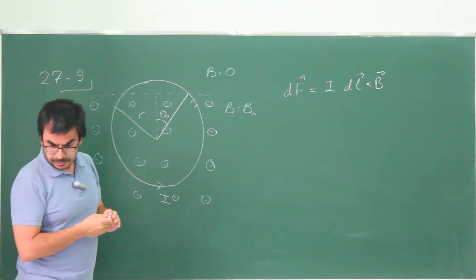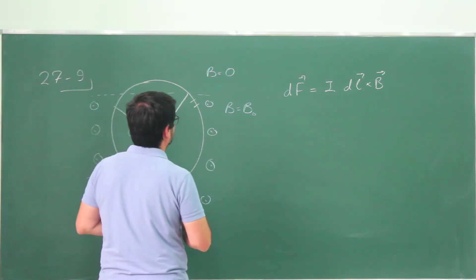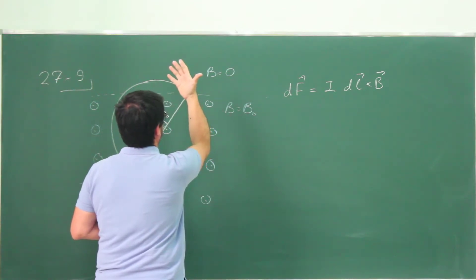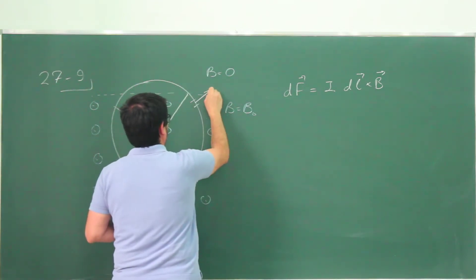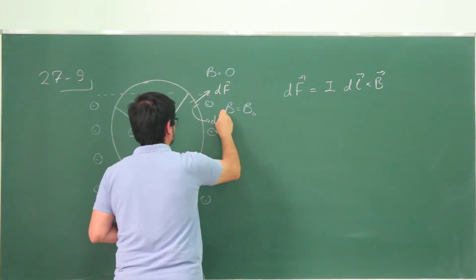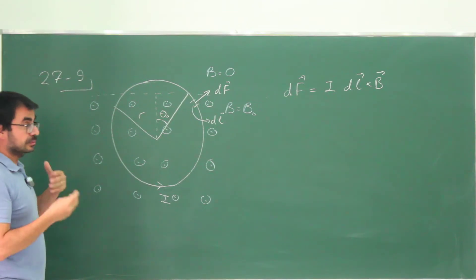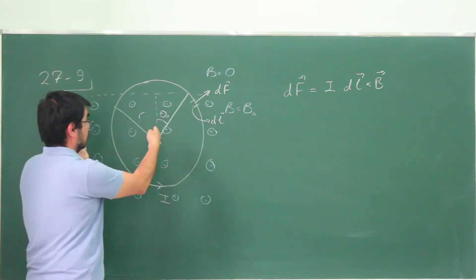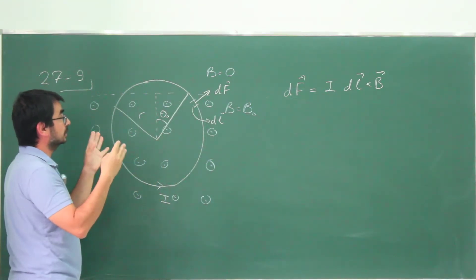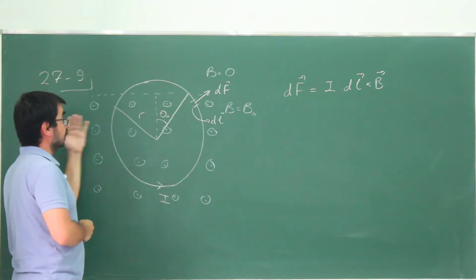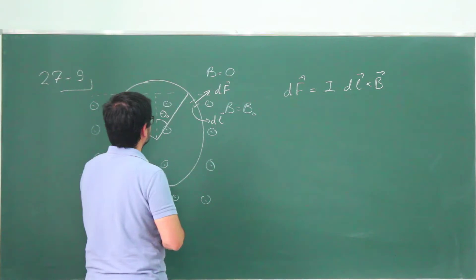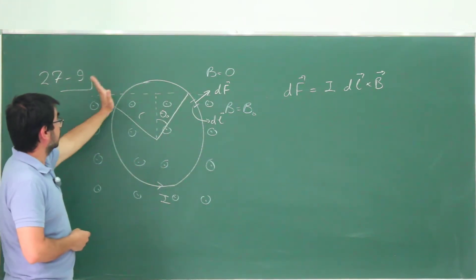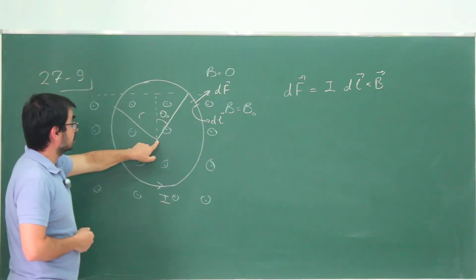I'm going to use the right-hand rule. Extend your arm in the direction of the first vector and curl your fingers in the direction of the second vector. This is a cross product, so the resultant vector is perpendicular to both. Since B is out of the blackboard, the resultant must be in the plane — and perpendicular to the line segments on the circle, so it must be in the radial direction, pointing either towards or away from the center.